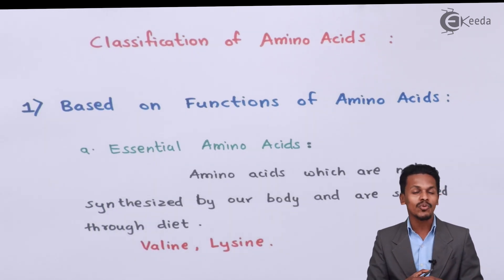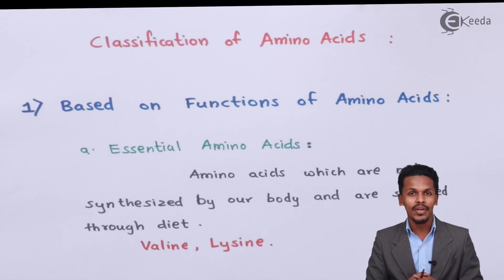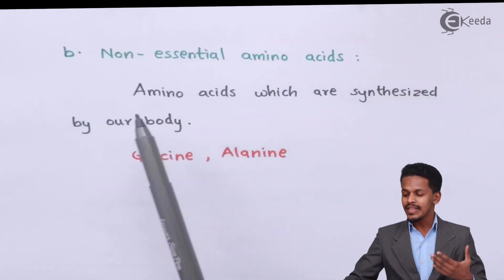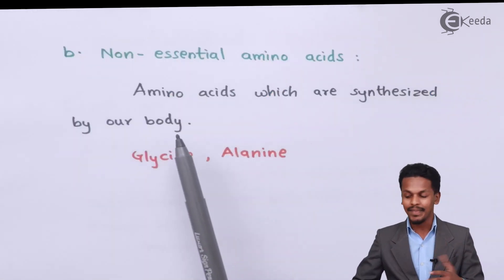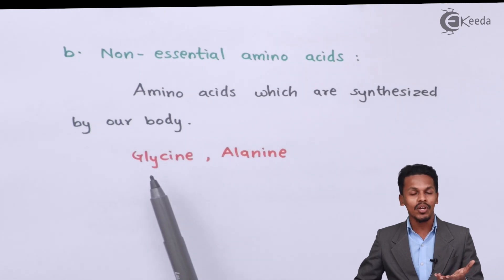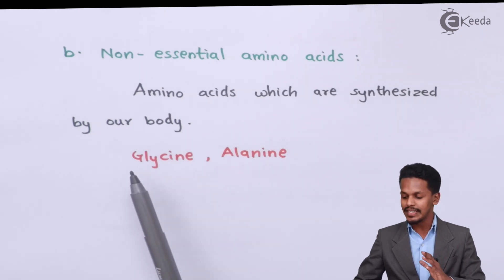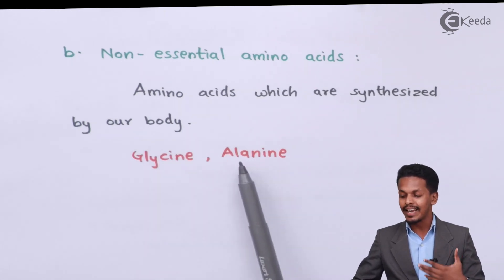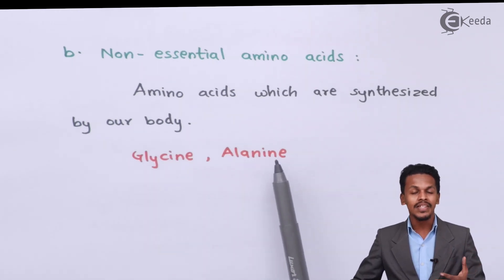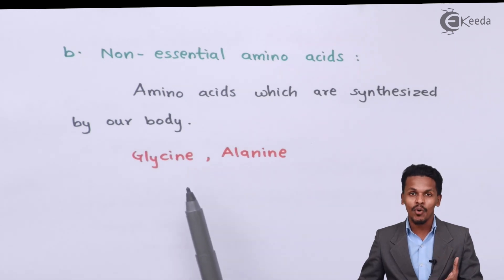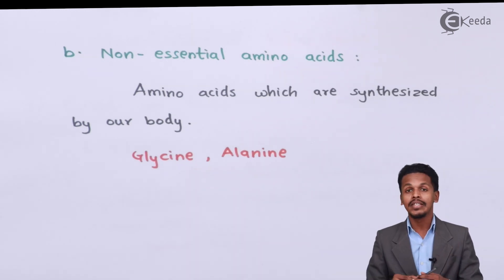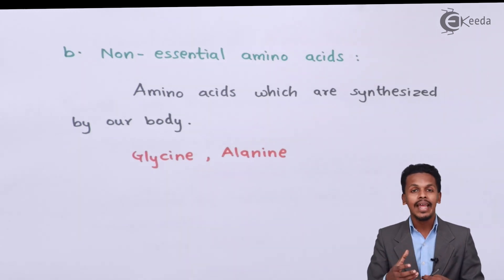Now let me talk about non-essential amino acids. These are the amino acids which are synthesized by our body. For example, glycine and alanine are synthesized by our body, and that's the reason we don't have to get them from a particular diet.